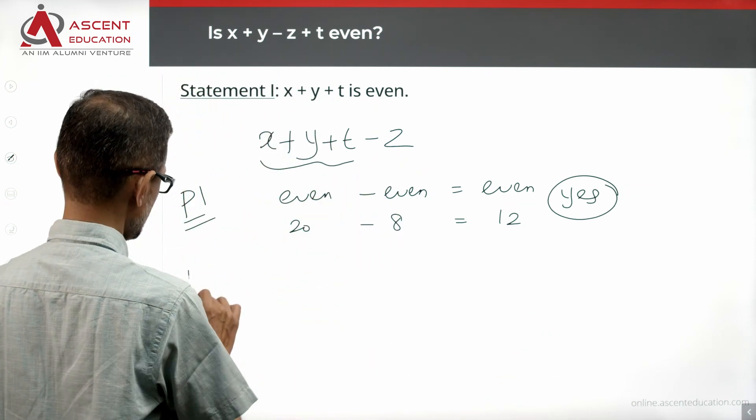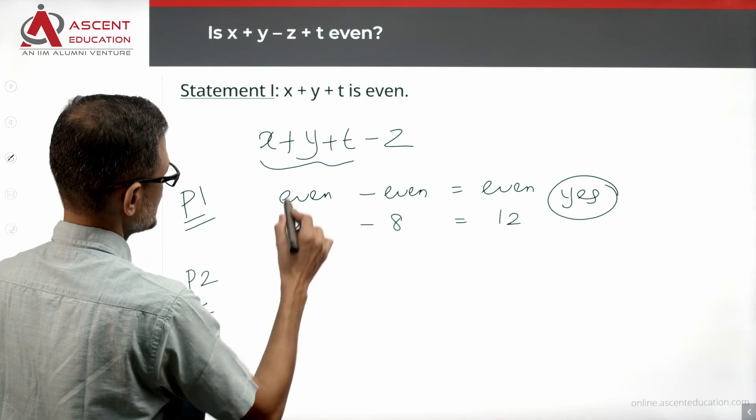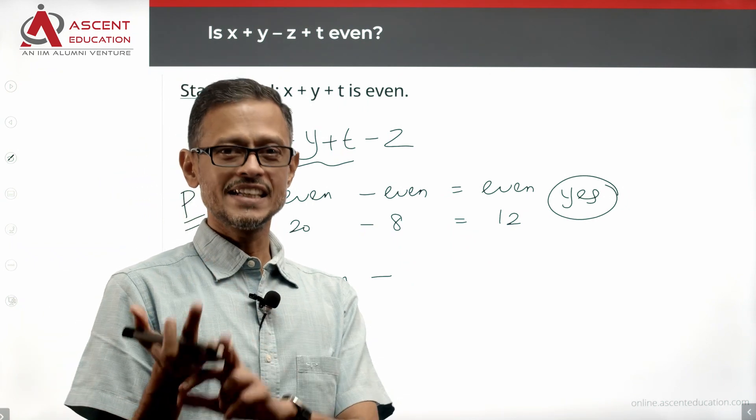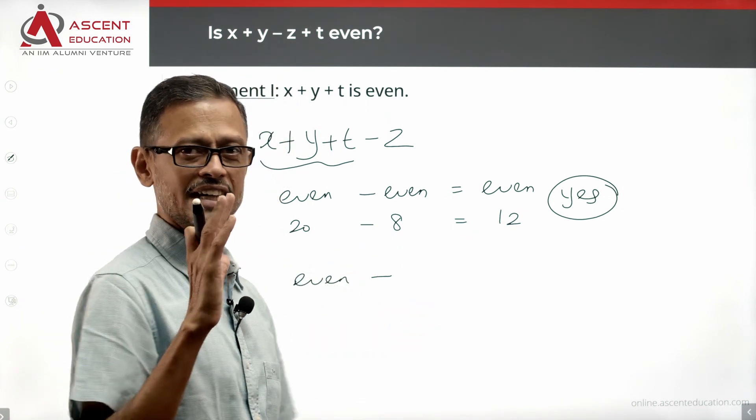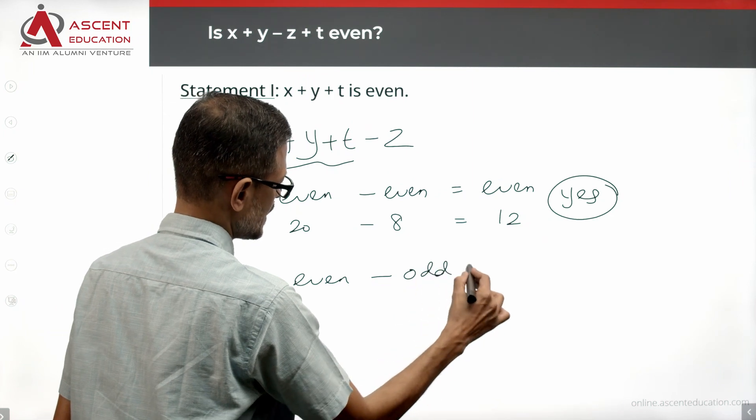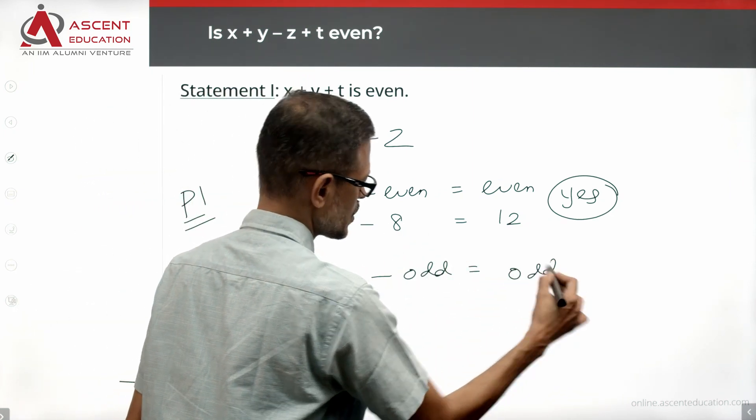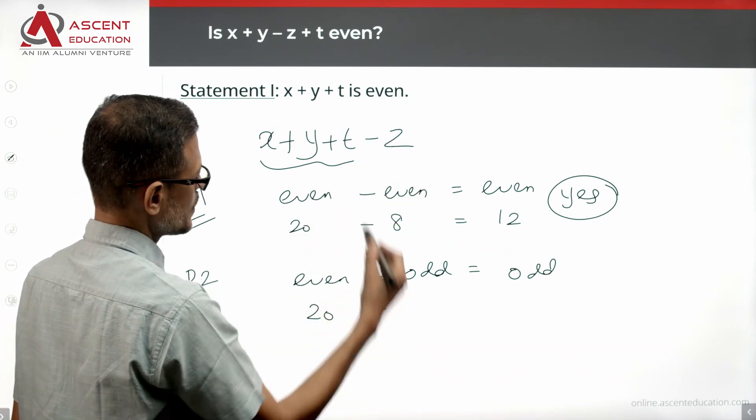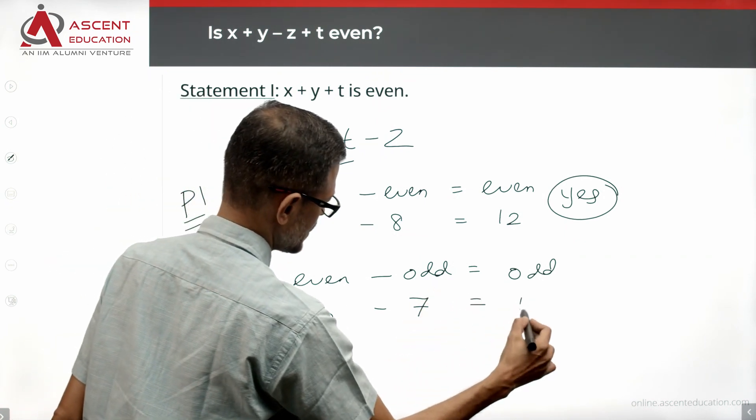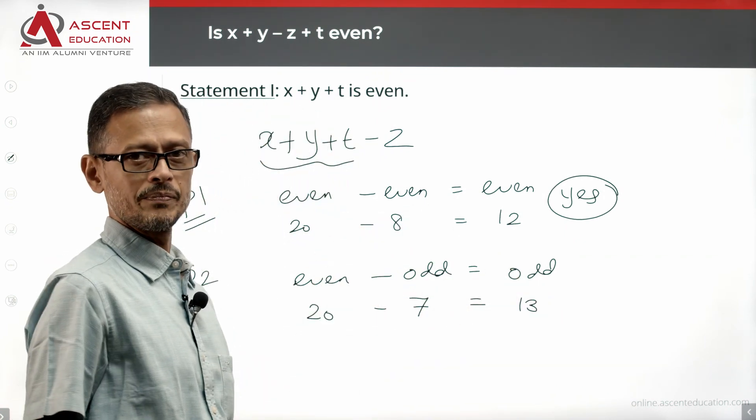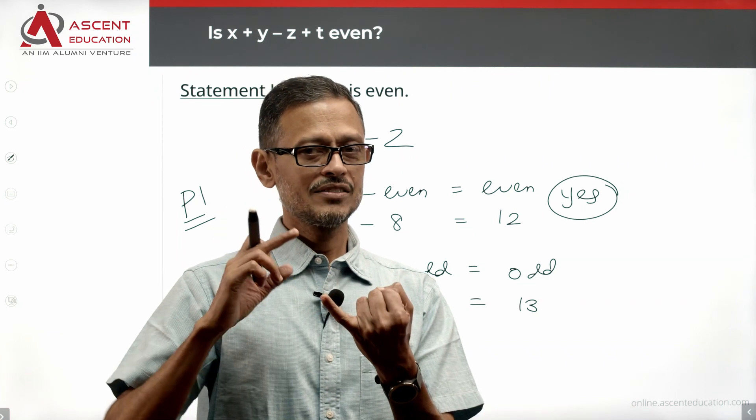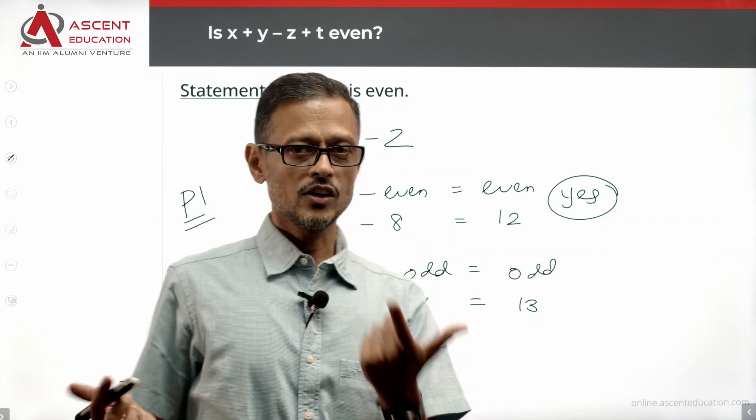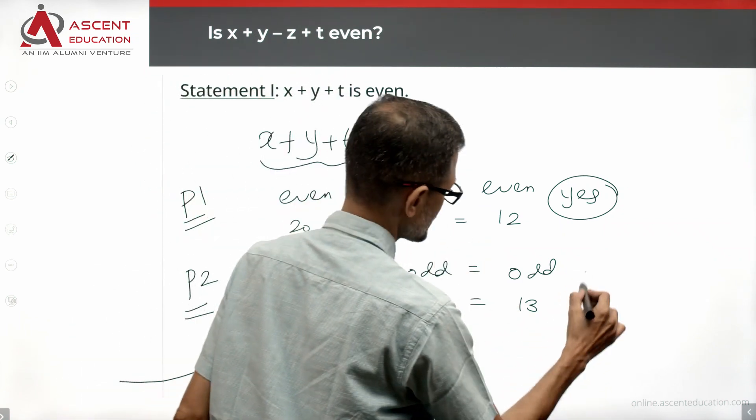If z is not even - that is possibility number two - x plus y plus t is even, but z is odd or a non-integer. We'll just go with odd. We just need another alternative possibility. If it's odd, then even number minus odd number - net result is odd. For example, x plus y plus t is 20, z's value is 7. So 20 minus 7 equals 13, that is an odd number. So if z's value is even, final answer is even. If z's value is not even, which means it could be odd or non-integer, final answer is not even, the answer is no.